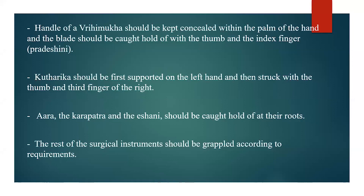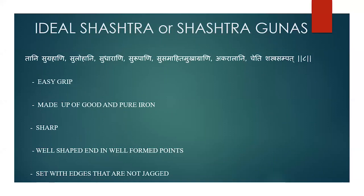The rest of the surgical instruments or Shastra should be grabbed according to the requirements. The ideal characteristics of a Shastra, or Shastra guna, are: Sugrahani — easy to be gripped; Sulohani — made up of good and pure type of metals, specifically iron; Sudharani — sharpest; Surupani — well shaped and with well-formed points; Su Samahit Mukha Grani — set with edges that are not jagged; and Akaralani — meaning an even edge.